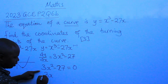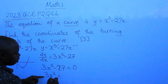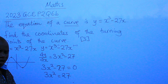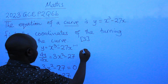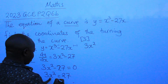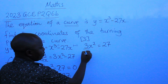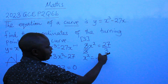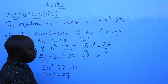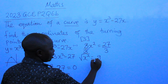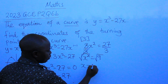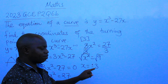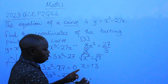So 3x² equals 27. To find x, we divide both sides by 3, giving x² equals 9. Introducing the square root on both sides, x equals plus or minus 3. The square root of 9 produces two answers — positive and negative — so we have x equals positive 3 and x equals negative 3.